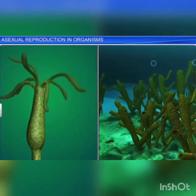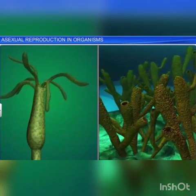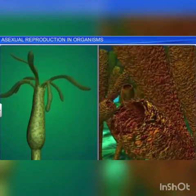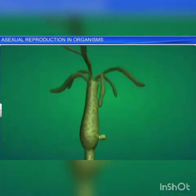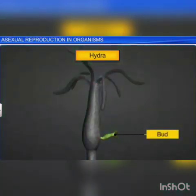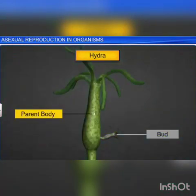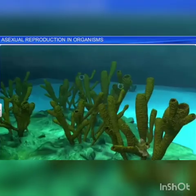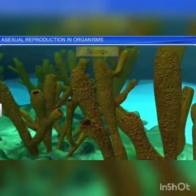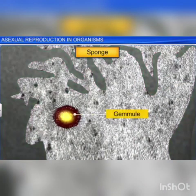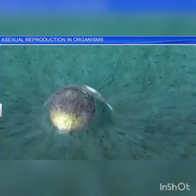Apart from fungi, we also see asexual reproductive structures in certain members of kingdom Animalia. In the case of hydra, buds which develop on the parent body serve as a means of reproduction. Likewise, the sponge produces internal buds called gemmules that aid in asexual reproduction.